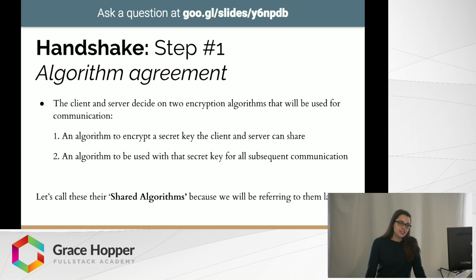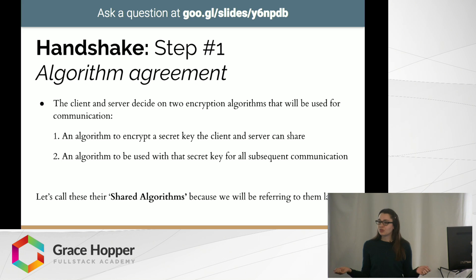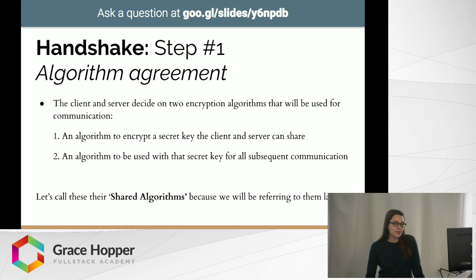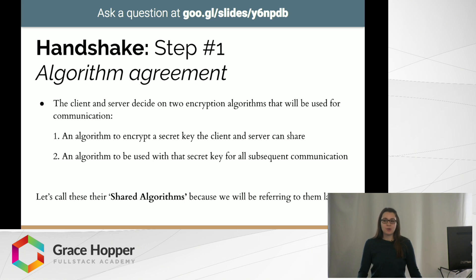Algorithm agreement is when the client and server decide on two encryption algorithms that will be used for communication. The first algorithm will be used to encrypt the secret key, and the second algorithm will be used to encrypt all subsequent communication — using the secret key they've encrypted. Just remember these are the shared algorithms decided upon between the client and server at their first point of contact.